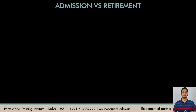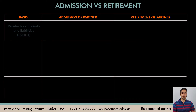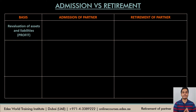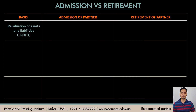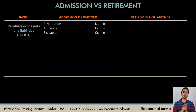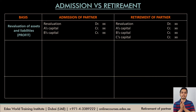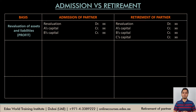Let's see the difference between the entries at the time of admission and retirement. The revaluation of assets and liabilities has already been discussed in detail in the admission video. Assuming a profit on revaluation, in the admission question this profit was shared only by the old partners, not the new partner. But in a retirement question, the revaluation profit will be shared by all the partners of the firm, because all are existing partners. In case of a loss, the entries would be opposite — debit all partners' capital and credit the revaluation account.